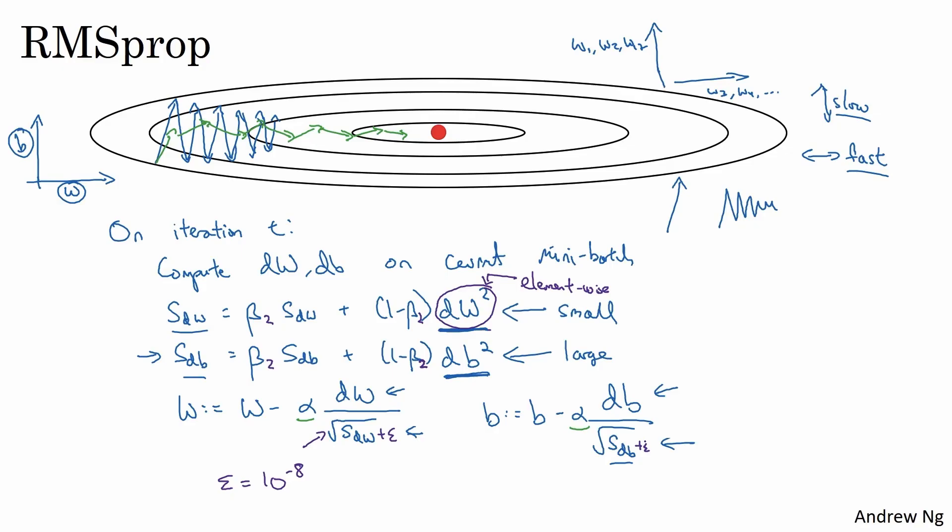So that's RMSprop. And similar to momentum has the effects of damping out the oscillations in gradient descent, in mini-batch gradient descent, and allowing you to maybe use a larger learning rate alpha, and certainly speeding up the learning speed of your algorithm.